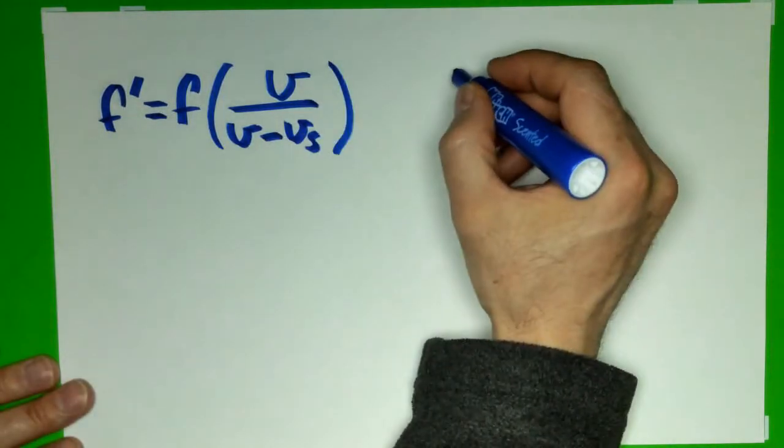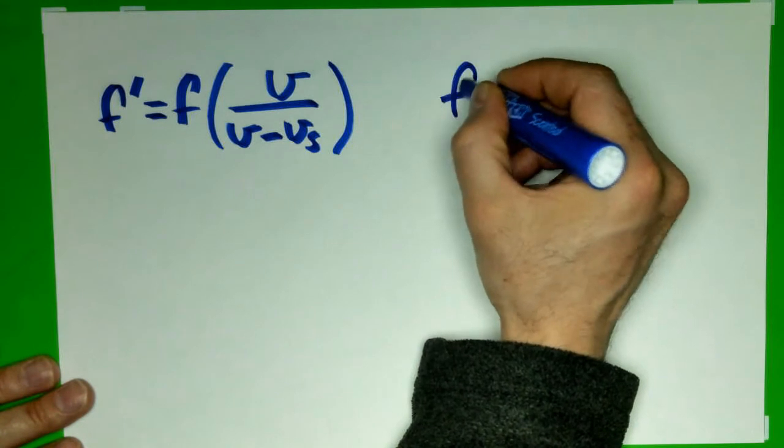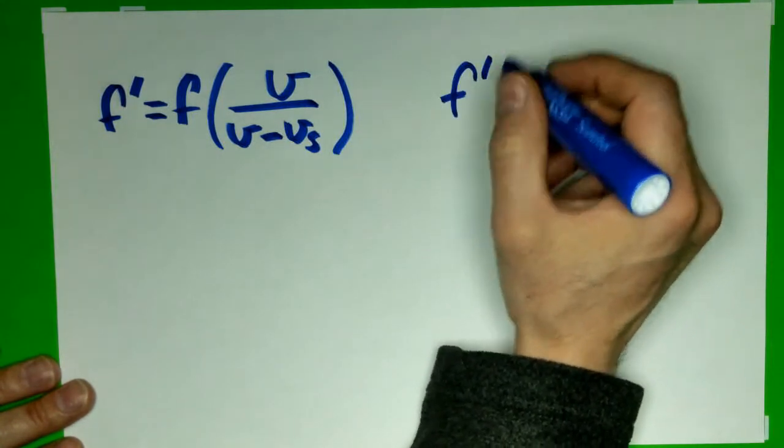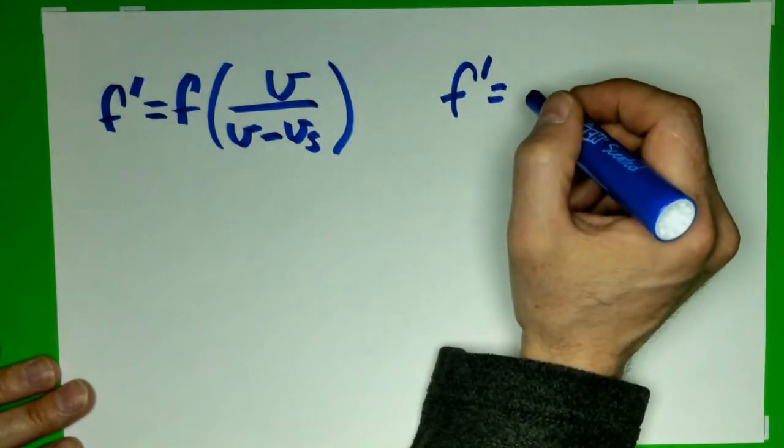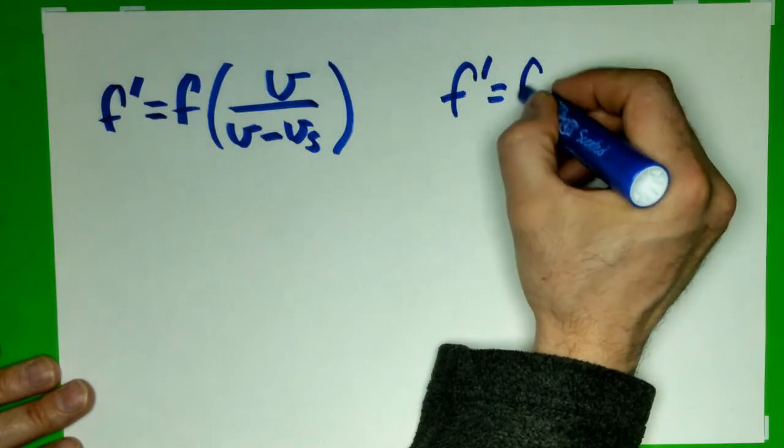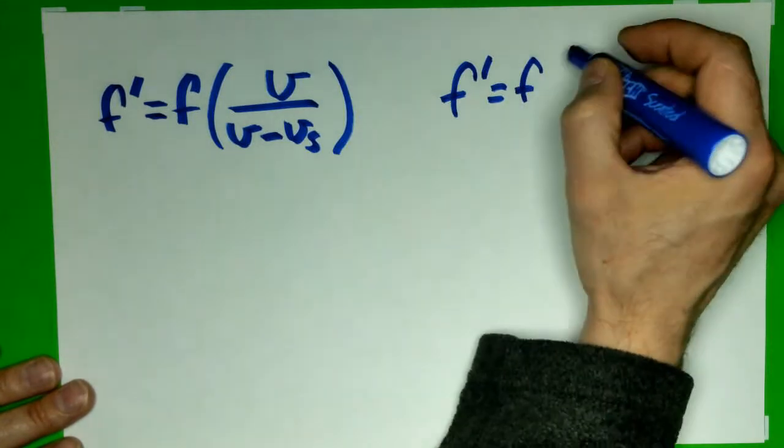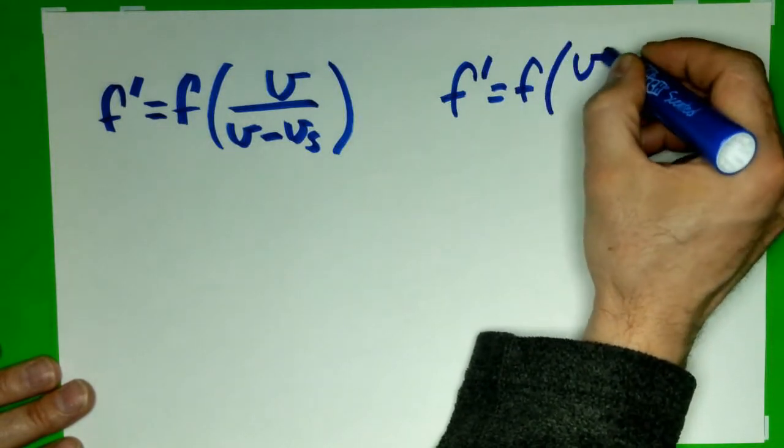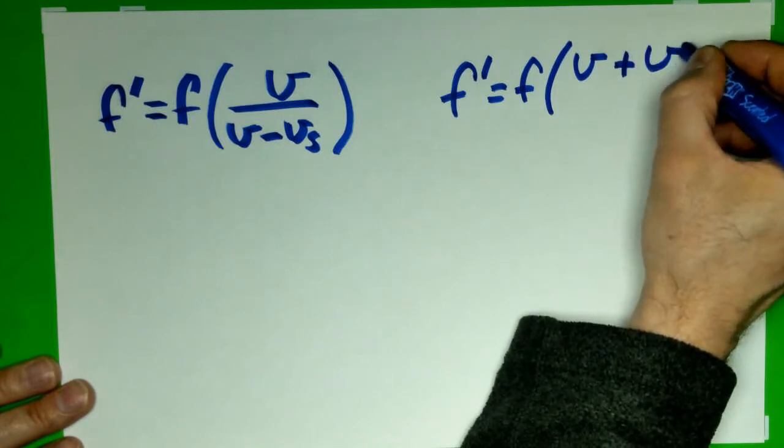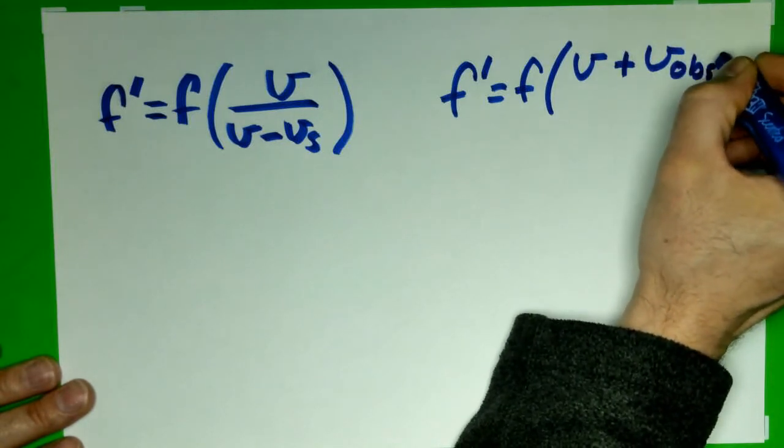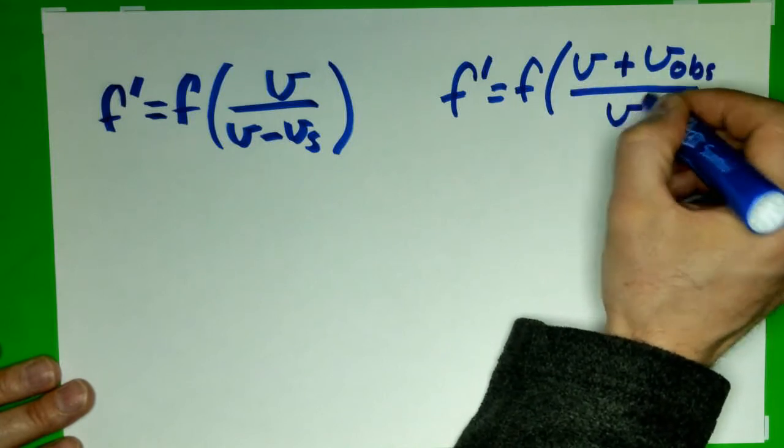We also found that the perceived frequency for an observer moving towards a stationary source was equal to the true frequency of the source times the velocity of sound plus the velocity of the observer divided by the velocity of sound.